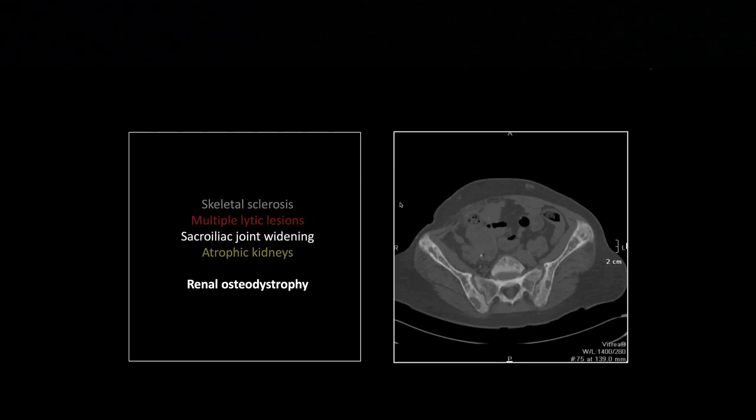The sacroiliac changes are quite impressive. You can see the iliac side subperiosteal resorption. This one may have gotten so advanced that there's a little fuzz on the sacral side as well, but it's predominantly on the iliac side. We've lost that thin pencil line of normal cortex.